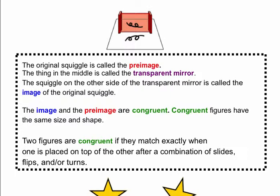So you heard me use some vocabulary when I was showing you the transparent mirror. When you draw the original drawing, that's called the pre-image right there. That's what you draw. When you go ahead and put your transparent mirror down, which is this right here,